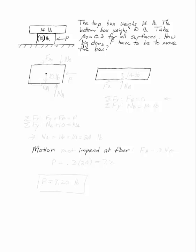Top box weighs 14 pounds, the bottom box is 10 and I want to move that box. So if I start with my free body diagrams, the bottom box has a 10 pound load and P has two friction forces that will oppose the motion.